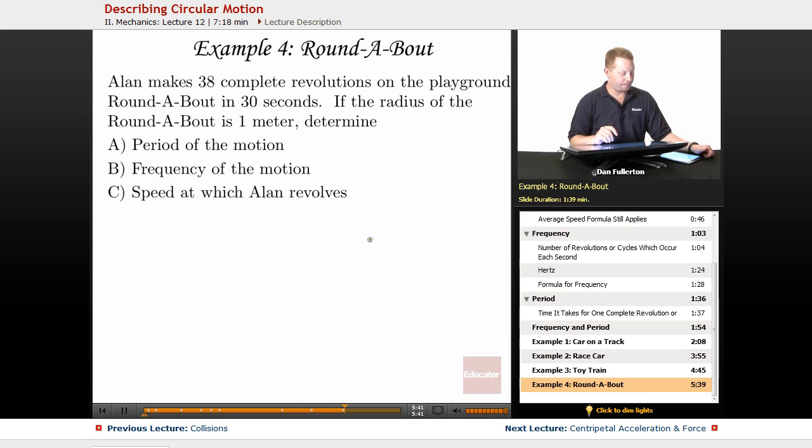A roundabout on a playground. Alan makes 38 complete revolutions on the playground roundabout in 30 seconds. If the radius of the roundabout is 1 meter, let's determine the period of motion, the frequency of the motion, and the speed at which Alan revolves.